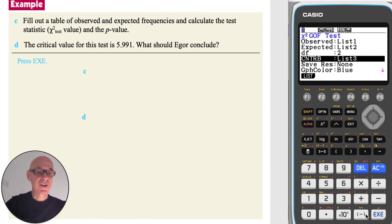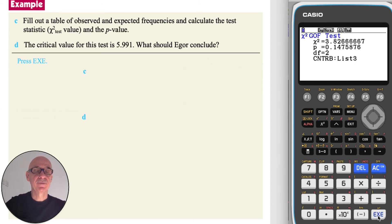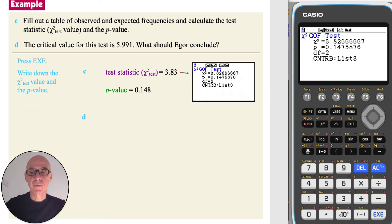So we see the critical value, the test statistic, and the p-value, rounding the values to three significant figures.